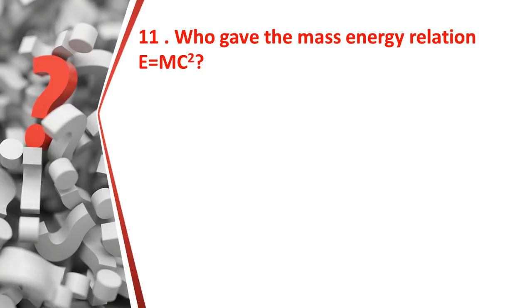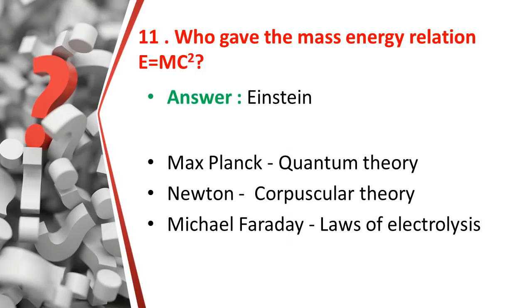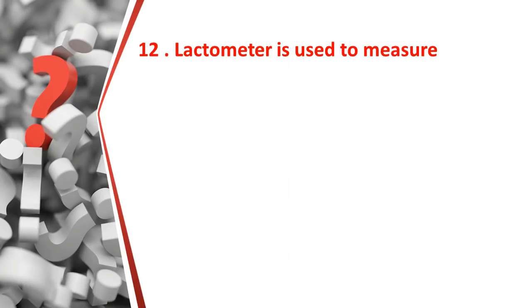The eleventh question: who gave the mass-energy relation E equals mc squared? The answer is Albert Einstein. Related facts: Max Planck found the quantum theory, Newton found the corpuscular theory, and Michael Faraday gave the laws of electrolysis. So the mass-energy relation E=mc² was given by Albert Einstein.